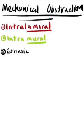Now let's talk about mechanical obstructions. There are three different types: intraluminal, intramural, and extrinsic. Intraluminal means inside the bowel wall. Intramural involves the bowel wall. Extrinsic, as the name suggests, is outside of the bowel wall.